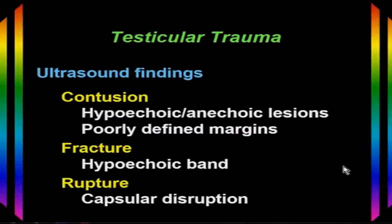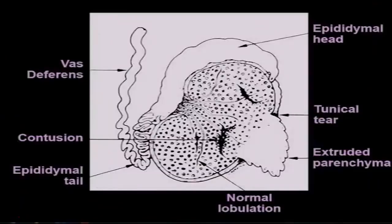Sometimes the testicle itself is involved, so we need to look at it carefully after trauma. With a contusion, we'll have hypoechoic or anechoic lesions with poorly defined margins. With a fracture, there's a hypoechoic band right across the testicle. With rupture, there's disruption of the capsule — a tear in the tunica albuginea with some parenchyma extruded through the gap — and it's common to have an associated hematoma.